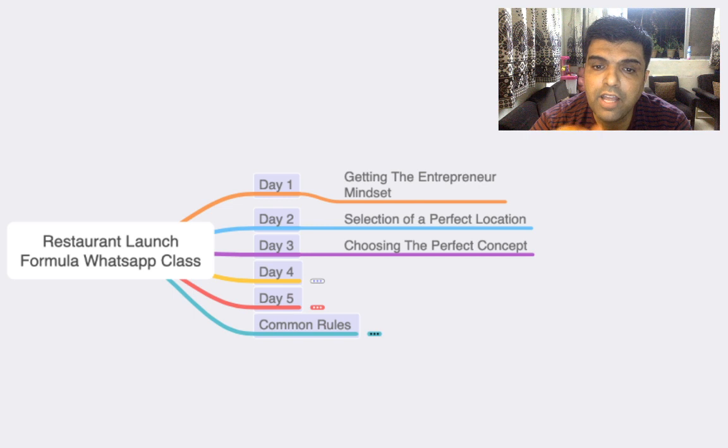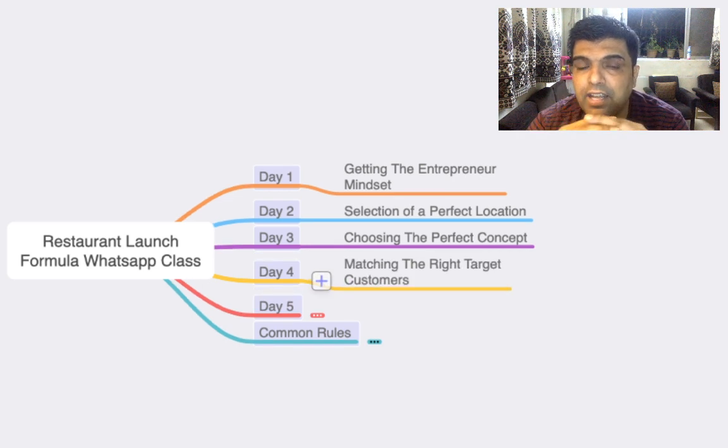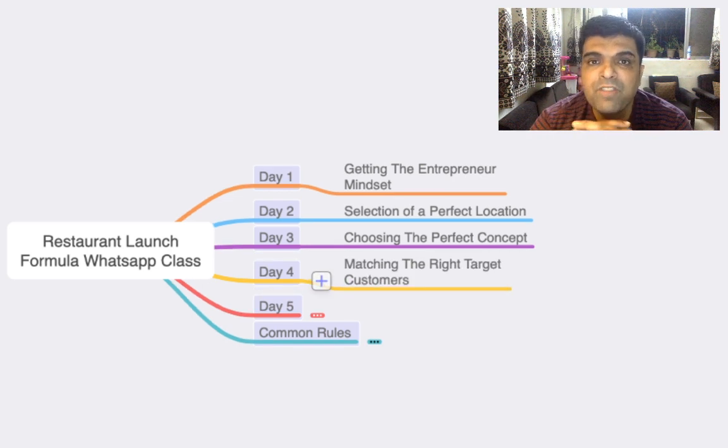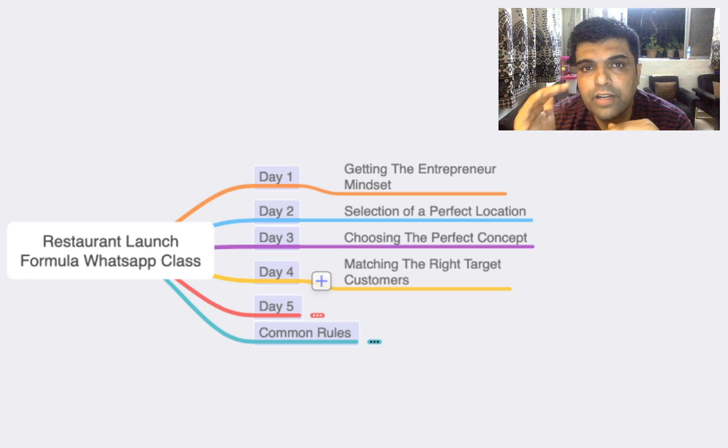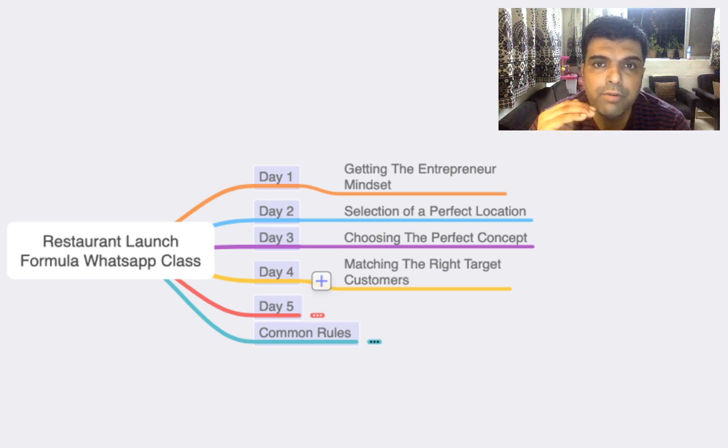Day 4 is when I cover matching the right type of target customers. So there are different types of customers which will match different types of restaurant concepts. You will be able to know in detail what is the psychology of a customer, how to think, what kind of customer is price-sensitive, how much they can spend.